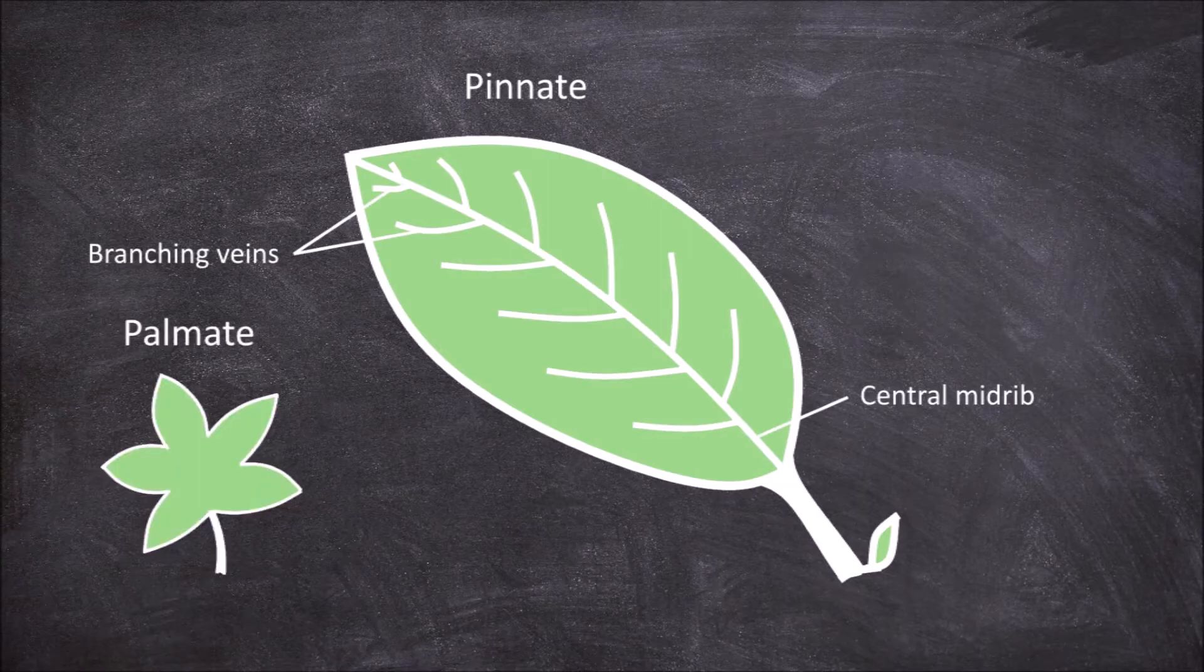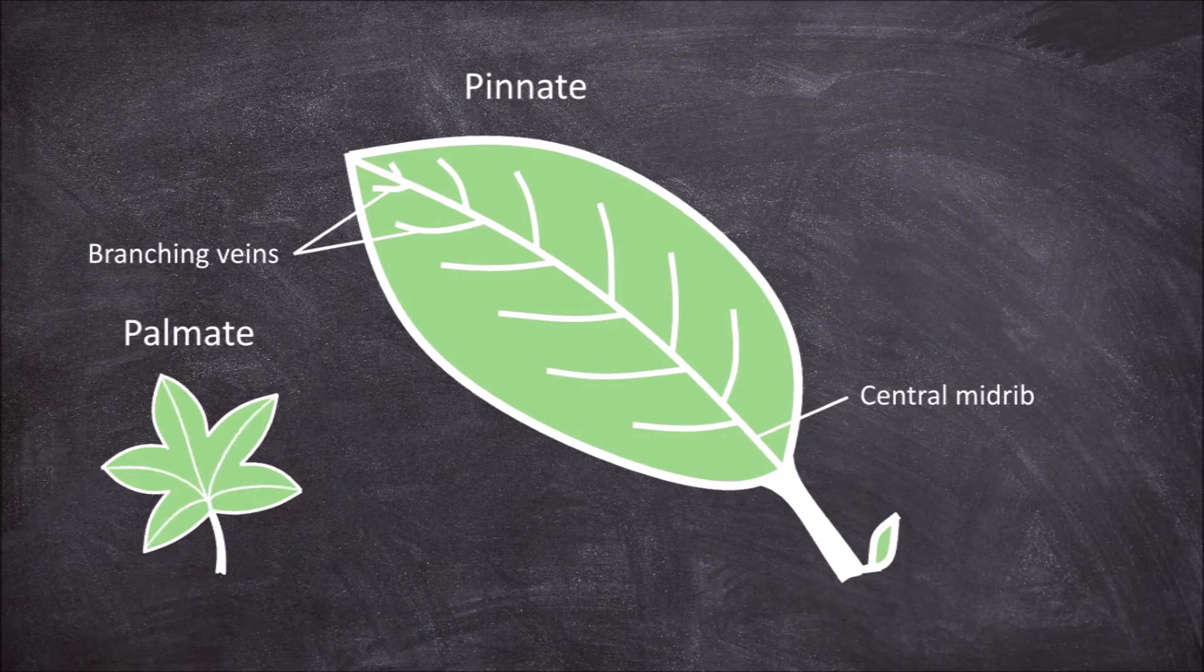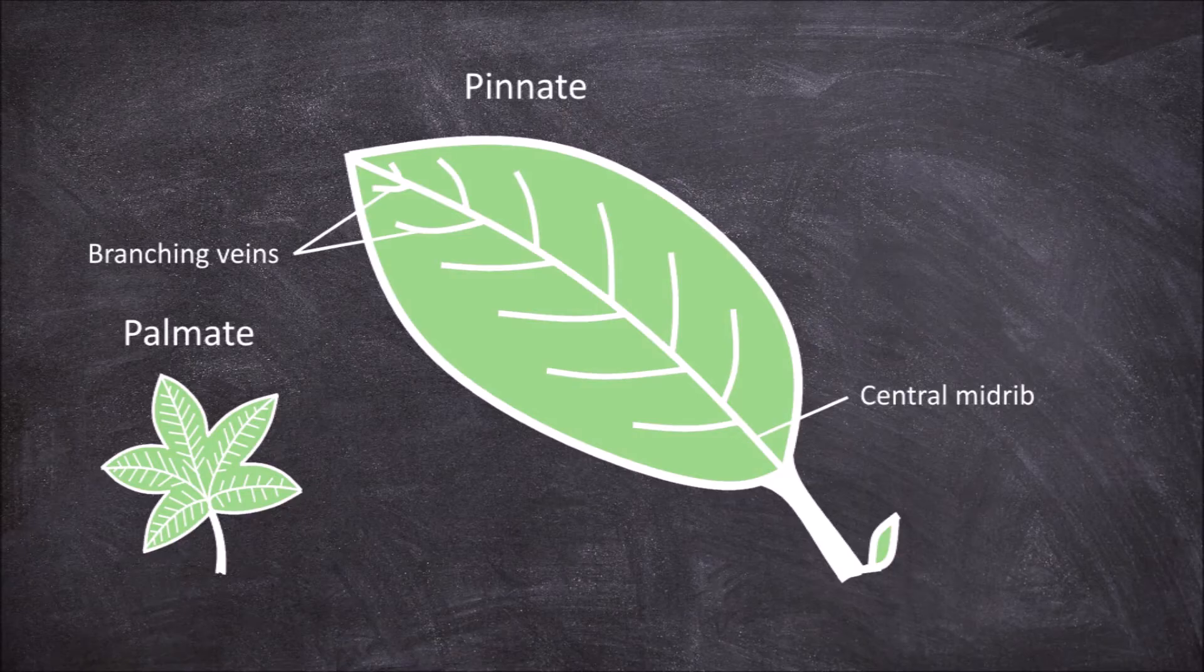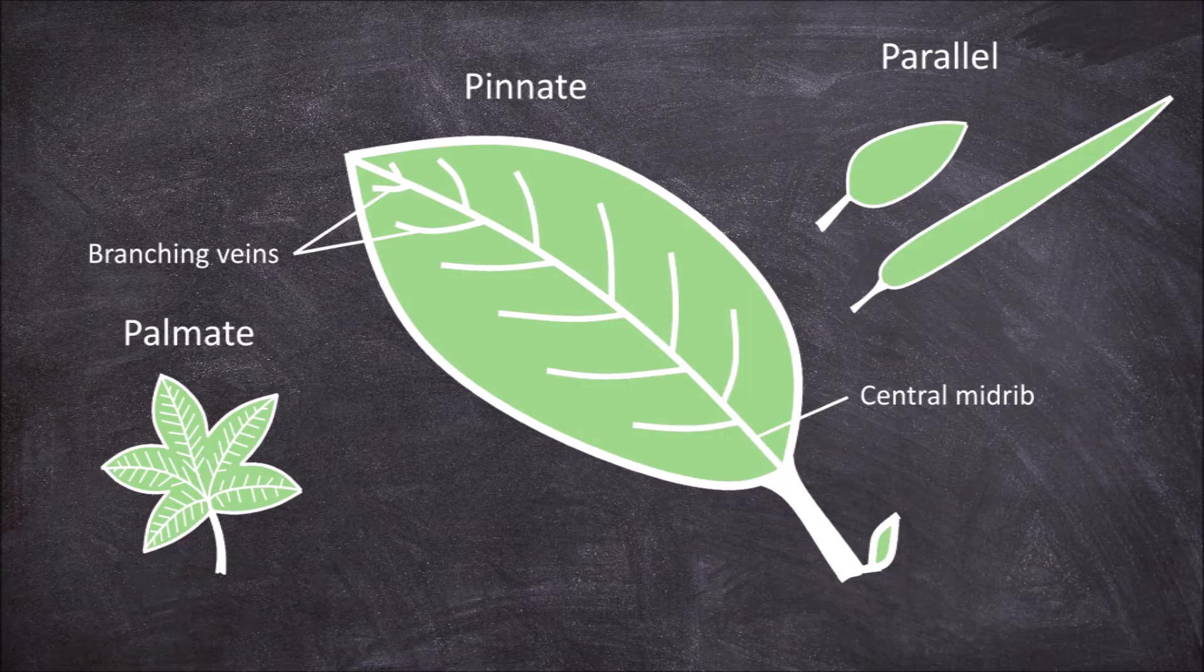It can also be palmate where it has several main veins extending out from the base of the leaf with further branching of smaller veins from each of these. The venation can also be parallel where several large veins run next to each other from the blade base to the apex.